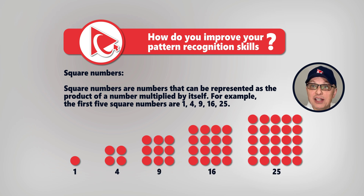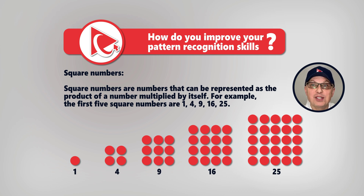Because 1 squared is 1, 2 squared is 4, 3 squared is 9, 4 squared is 16, and 5 squared is 25.